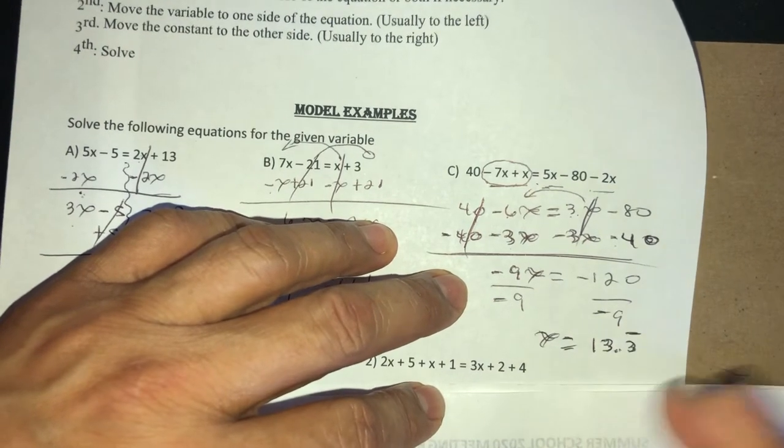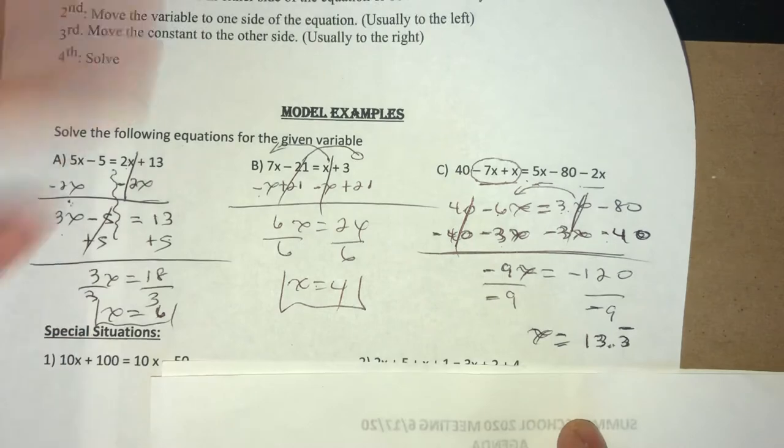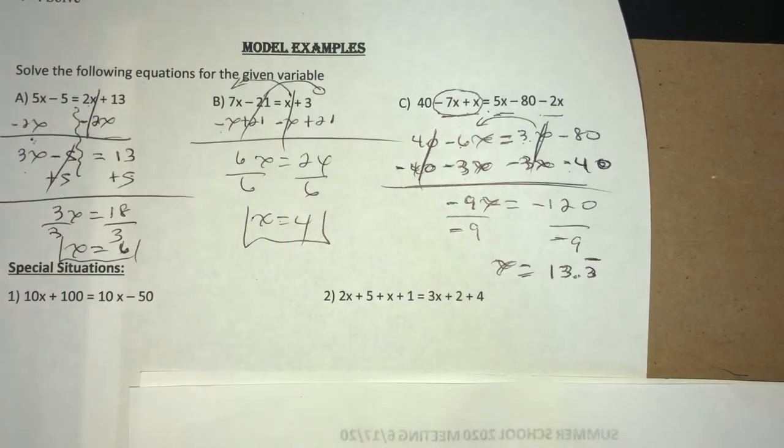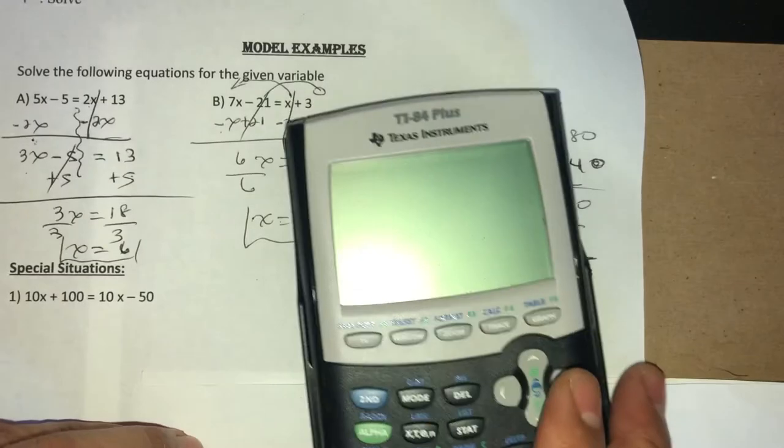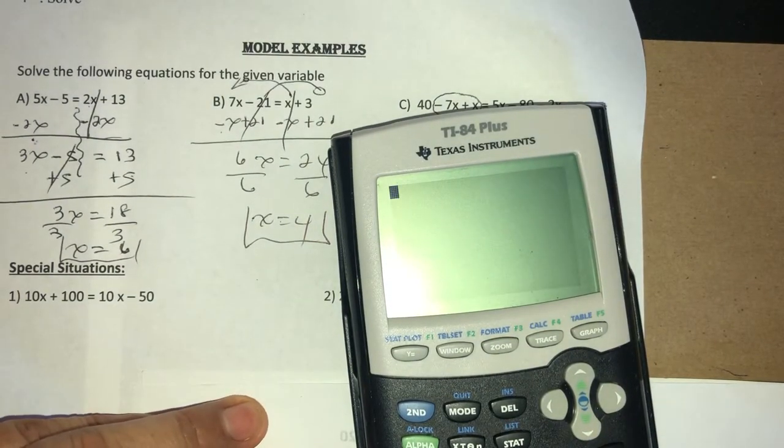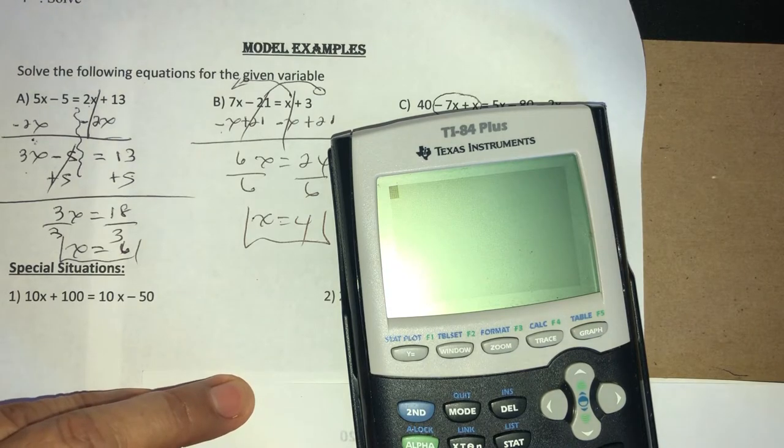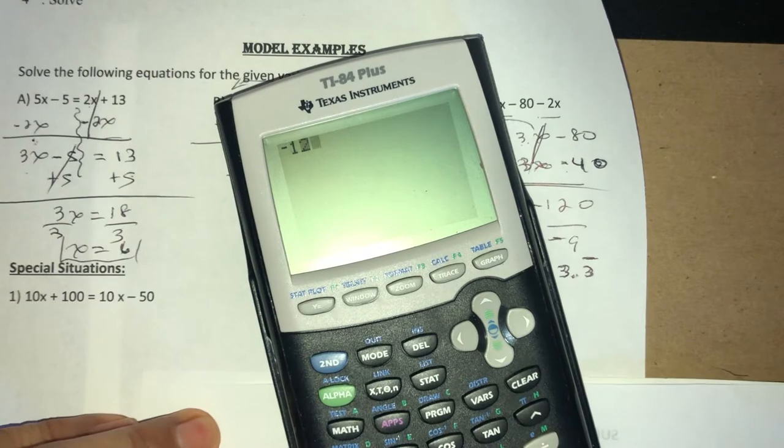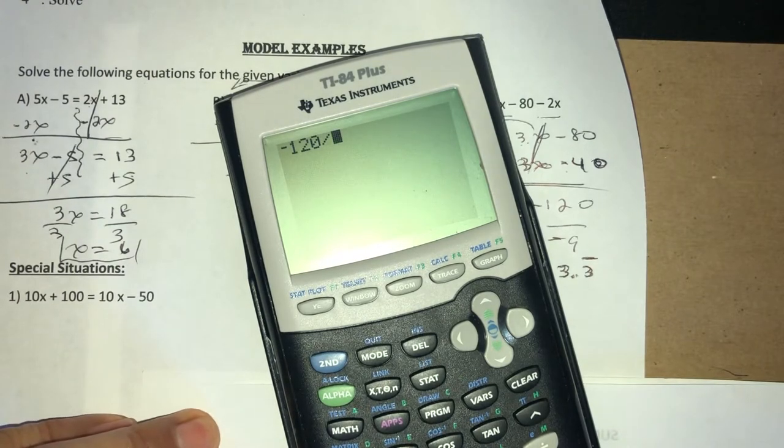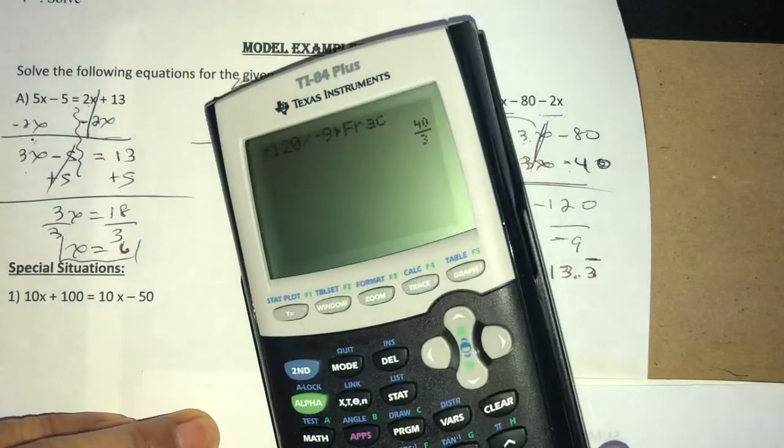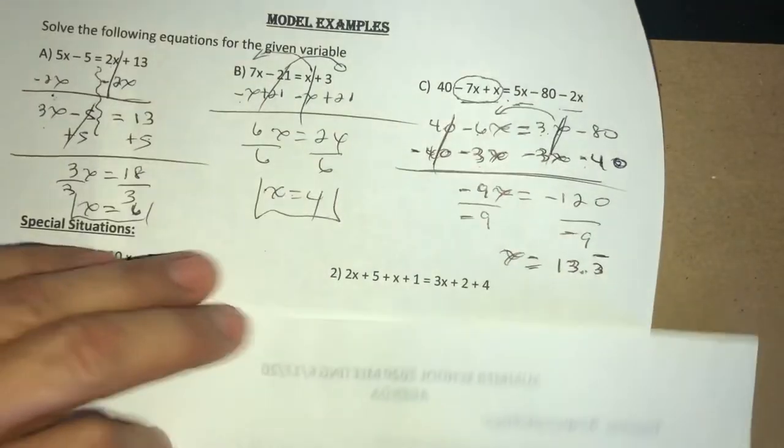You can leave your answer like that if you round it, but most of the time what they're gonna ask you to do is leave it as a fraction. So what I'm going to do is see if I can reduce the fraction. If I have negative 120 divided by negative 9 and I do math enter enter, it gives me 40 over 3.